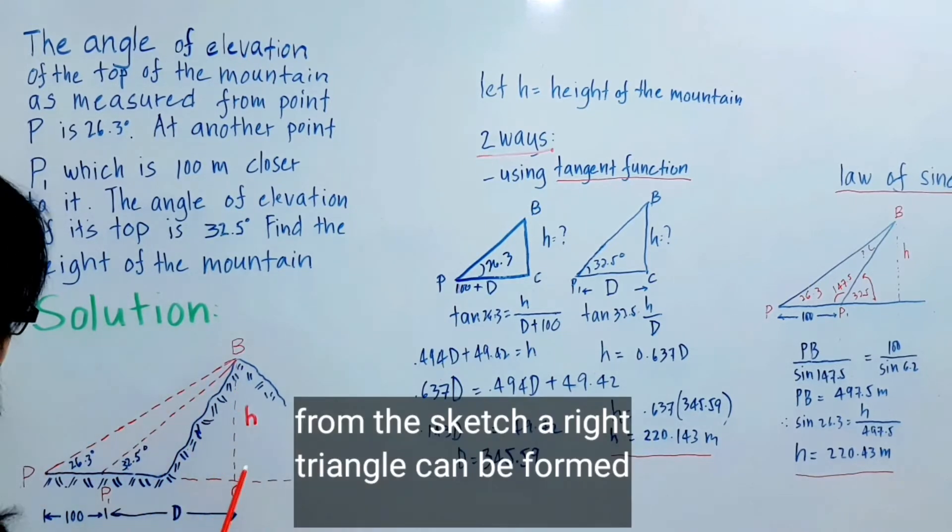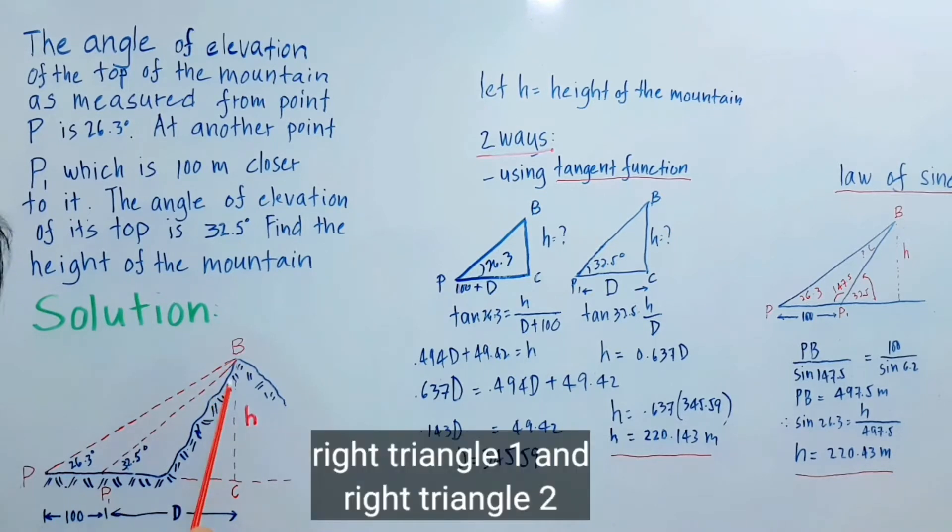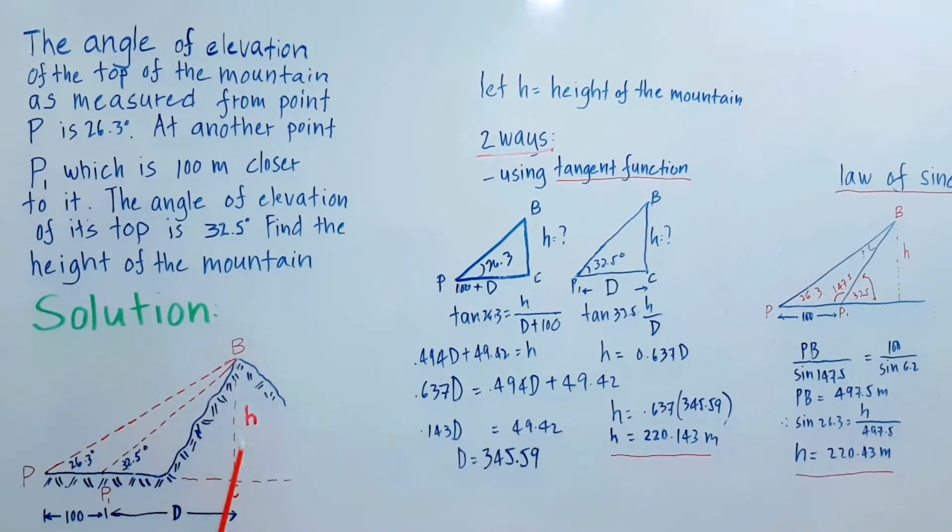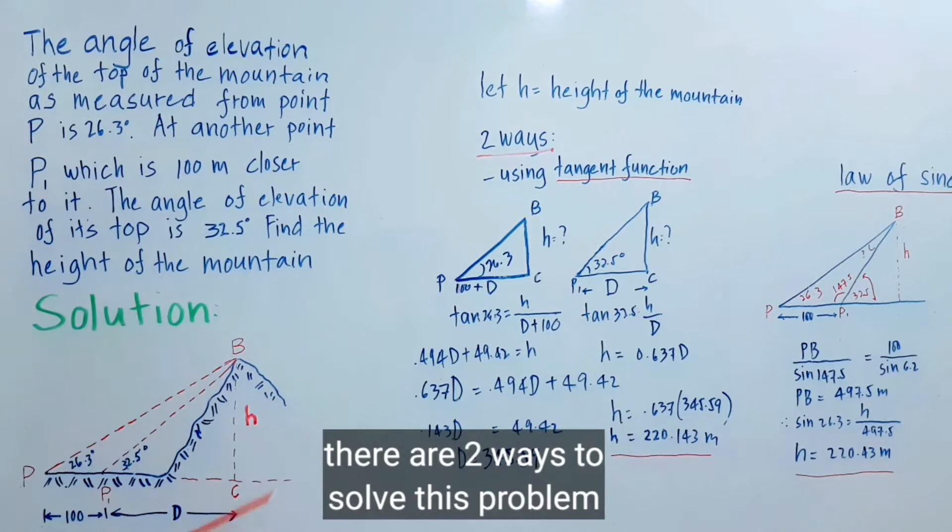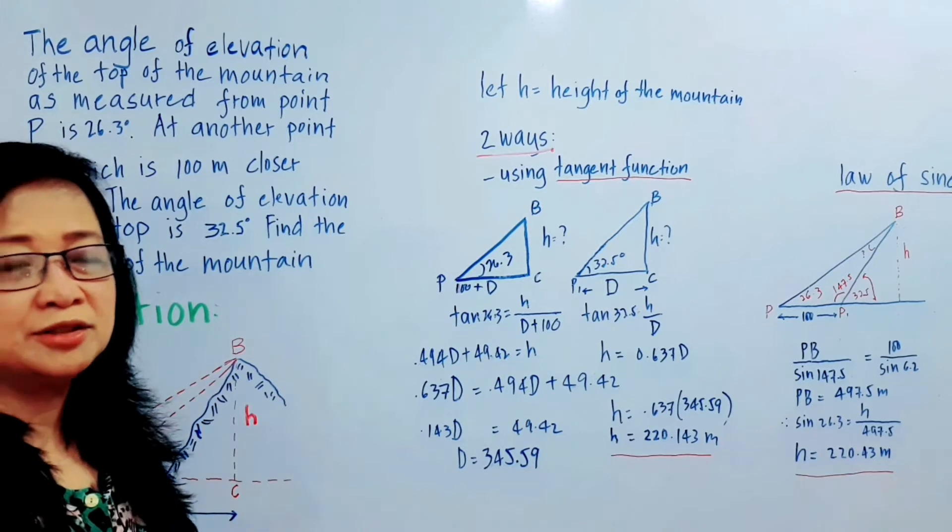In this diagram, you can see you can form a right triangle. We have right triangle 1 and right triangle 2. So in solving this, there are two ways: either you will use the law of sine or using the tangent function.